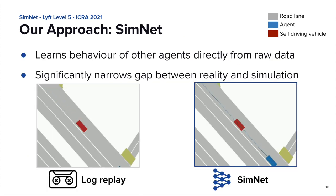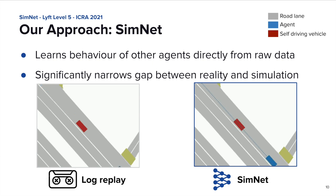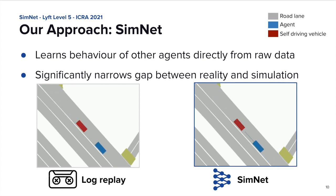What we propose is therefore SimNet — a machine learning simulation system which learns agent behavior directly from data, without any need for handwritten rules. Because of the way SimNet learns, the more data we feed to it, the more powerful it can get. At the same time, because this data comes from real-world examples, it already embeds all the properties we want in our simulation, such as realism and reactivity. After training SimNet on logs of real-world agents' behavior, we can use this model to control agents during simulation.